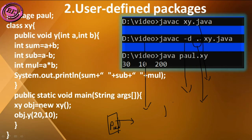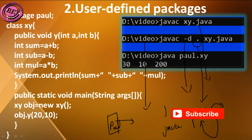After the creation of the package, how do we run that particular program? We use: java poll.xy. The class is present inside the poll package, so we run the program using java poll.xy. When we type java poll.xy, it runs successfully and gives the output.